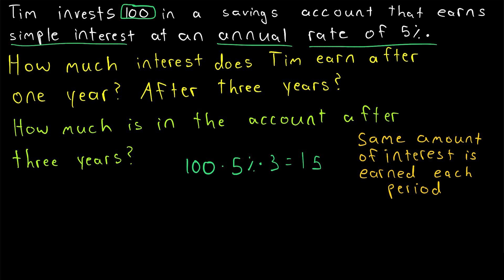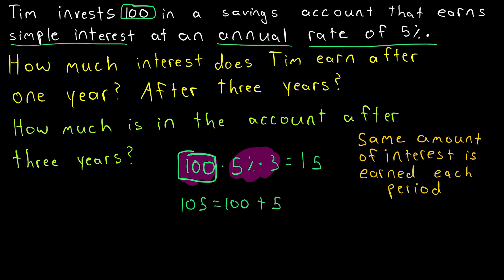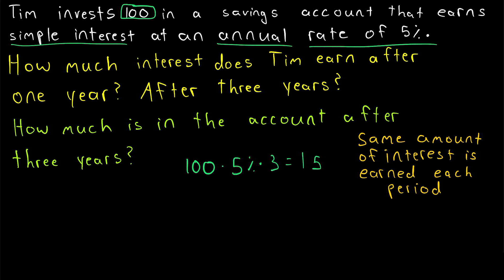The key difference between simple interest and compound interest is that when you earn compound interest, you earn interest on interest. Whereas for simple interest, notice that we're only earning on the original investment, 100. So after one year, there's actually 105 in the account — the original 100 investment plus the 5 in interest earned after one year. But even after that, interest is only being earned on the principal amount, 100. To contrast, when a fund is earning compound interest, interest is being earned on top of interest.